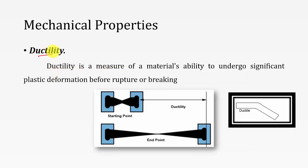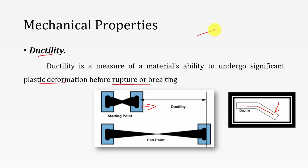Ductility is the measure of a material's ability to undergo plastic deformation before failure. Applying a tensile load causes it to deform to a greater extent. In beams, if you bend the beam it will bend to a greater extent without failure. In construction sites, people bend steel rods — the rods allow deformation before failure. In ductility, the material will not come back to its original shape after removal of the force; it remains in the deformed shape.